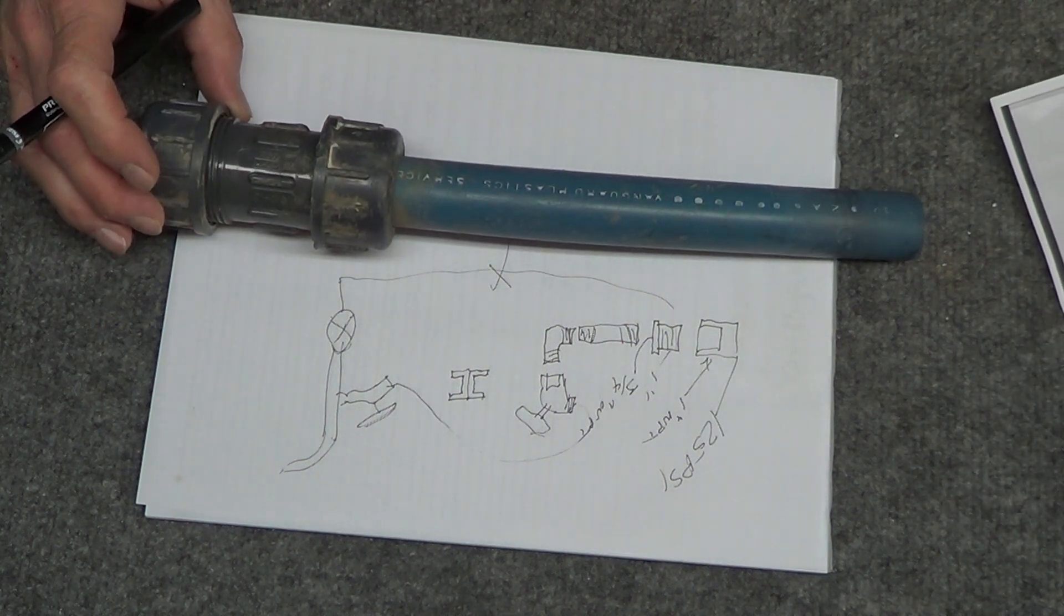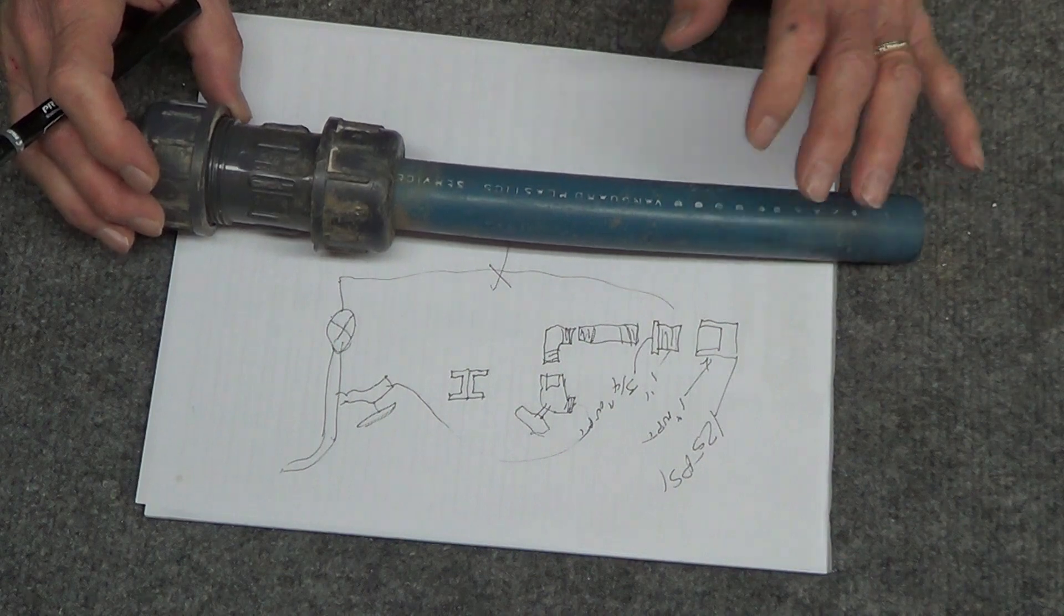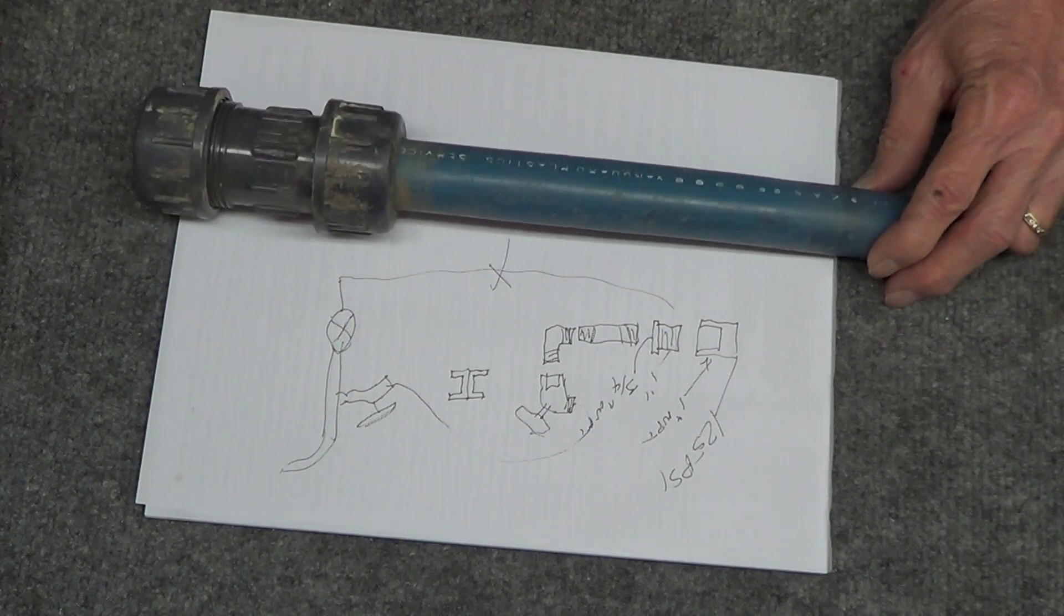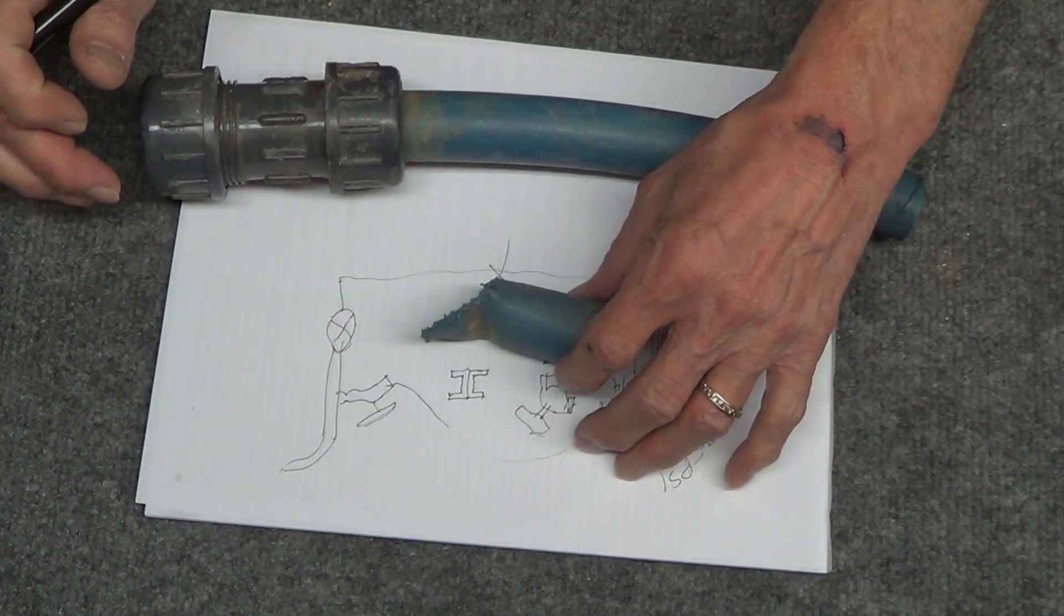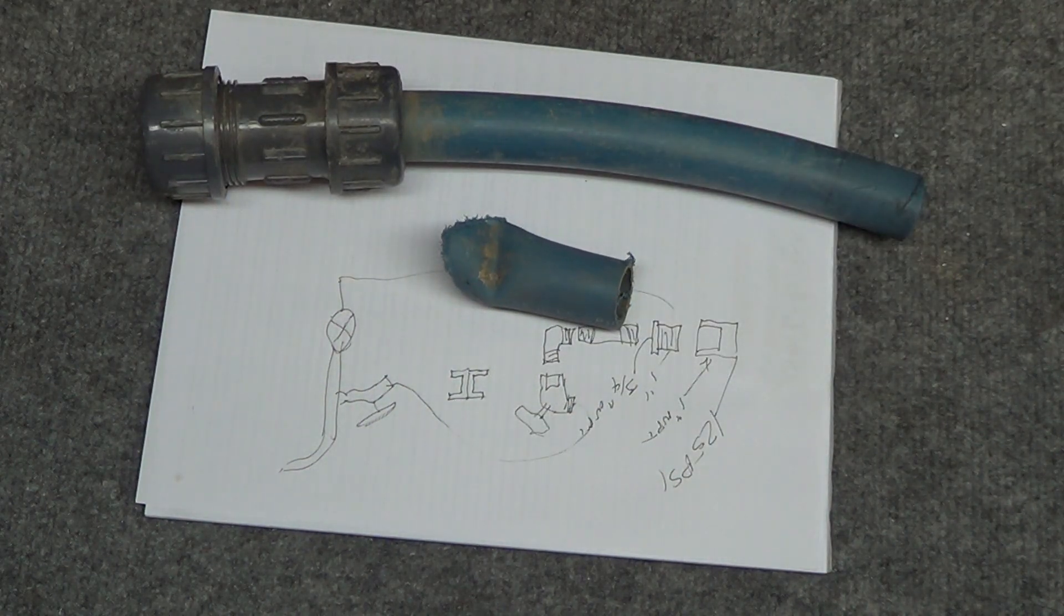Vanguard still does plastics, but not this pipe. They now do plastic dishes and containers for food. So that's what happened to me. Just wanted to share that with everybody.